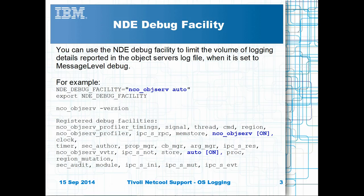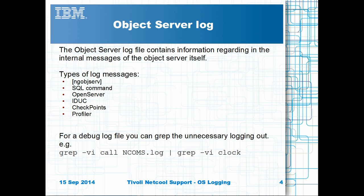Once enabled, the Object Server's Debug Logging is reduced to just Object Server and Trigger Debug Messages. You can use Unix grep to either search for specific log message types or to remove unwanted log messages such as clock when reviewing the log files.